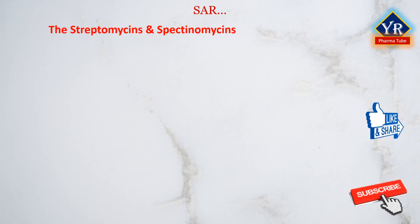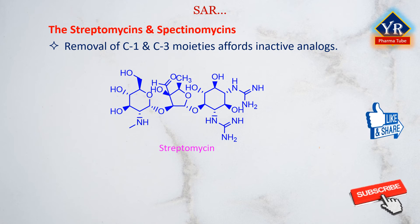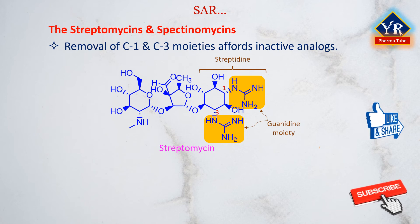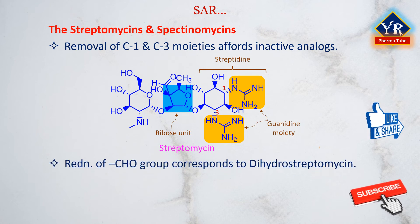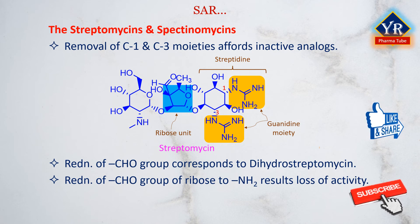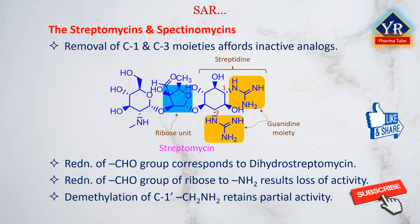Coming to the streptomycins and spectinomycins: removal of the C1 and C3 amidino moieties from the streptidine unit of streptomycin affords inactive analogues. Elaboration of the guanidino moieties by alkylation or acetylation has also been detrimental in terms of activity. The ribose-based aldehyde functionality is apparently important for activity, but allows for some structural modifications. For example, reduction of the aldehyde to the corresponding alcohol affords dihydrostreptomycin, which is an excellent derivative. However, reductive amination of the ribose aldehyde results in loss of activity. Demethylation of the C1-methylamino group retains partial antibacterial activity.